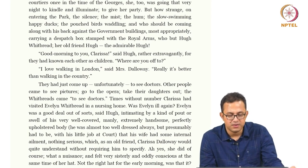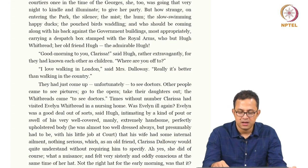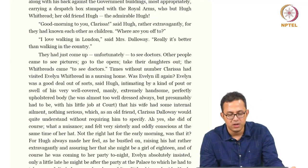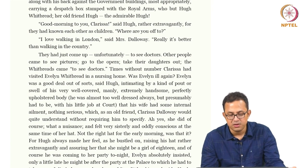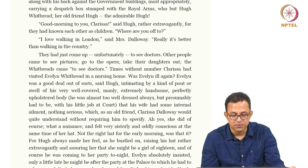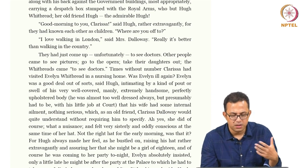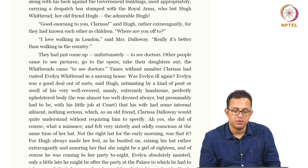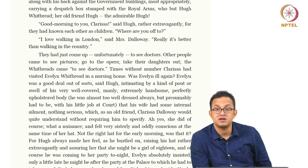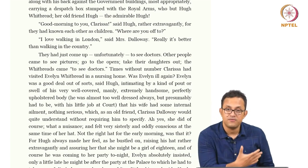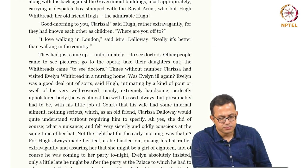'Times without number, Clarissa had visited Evelyn Whitbread in a nursing home. Was Evelyn ill again?' Evelyn was a good deal out of sorts, said Hugh, intimidating by a kind of pout, his very well-covered, manly, extremely handsome, perfectly upholstered body. He was almost too well dressed always. That his wife had some internal ailment — nothing serious — which as an old friend Clarissa Dalloway would quite understand without requiring him to specify. The whole idea of this ailing woman becomes important — Hugh Whitbread's wife seems to have some internal problem which Clarissa is supposed to have known already, without it having to be spelled out.